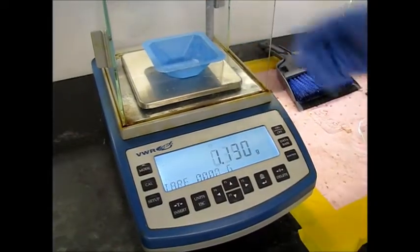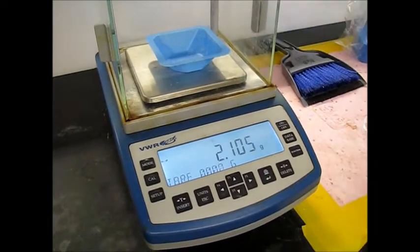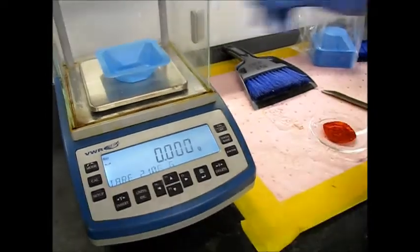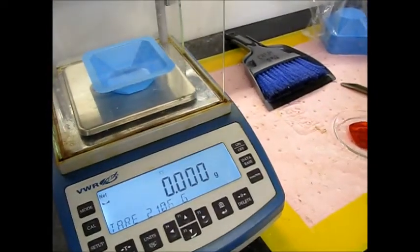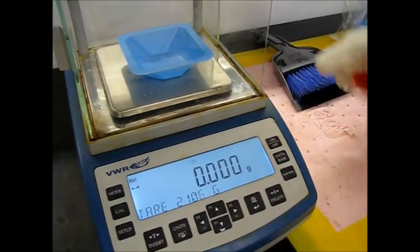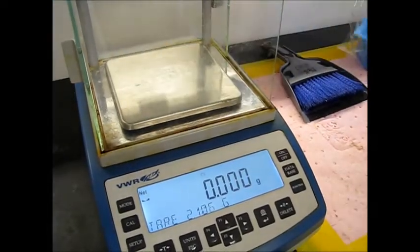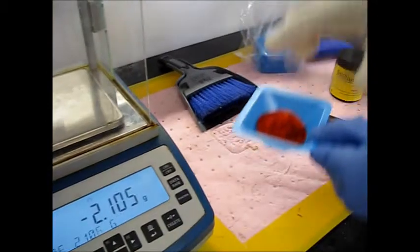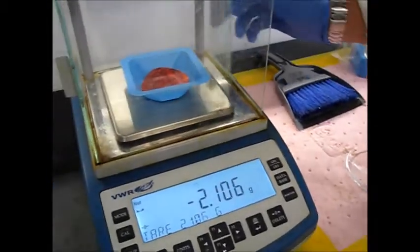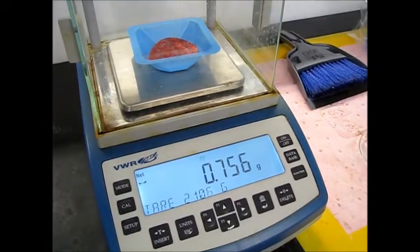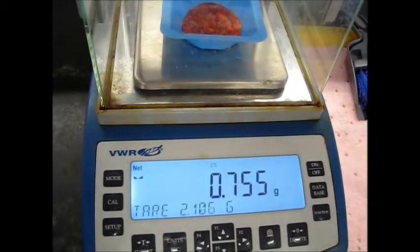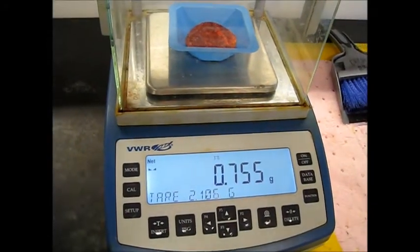So we just got it out of the oven. About to get the mass of our product. Add and tare there. 0.755. So we'll subtract the mass of our paper from that to get the mass of our product.